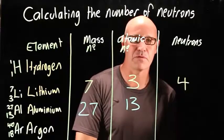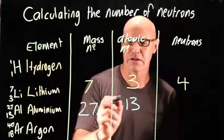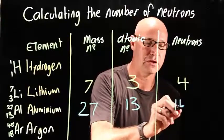So if we're working out the number of neutrons, 27 take 13, we have got 14 neutrons.